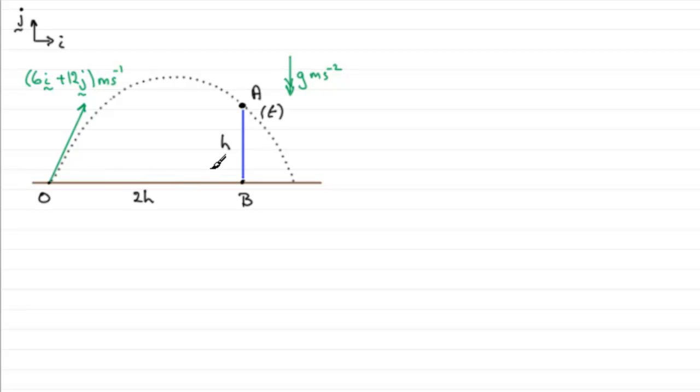Now, in order to get that time, I'm going to need to consider the horizontal motion so that I can get access to this value of h. So we do that by splitting our velocity into two components. Well, we know the horizontal component is 6 metres per second, and the vertical component will be 12 metres per second.